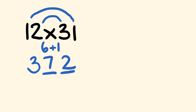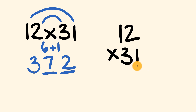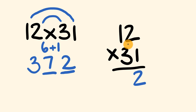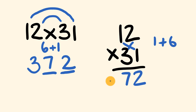Now for method number 2 — cross multiplication. I like this one even a little bit more. We set up 12 multiplied by 31 just like a normal multiplication. First, the units digit: 2 times 1 equals 2. For the tens digit, we cross-multiply: 1 times 1 is 1, plus 2 times 3 is 6 — that gives 7. Finally, the hundreds: 1 times 3 equals 3. Answer: 372 — same result, no surprise.